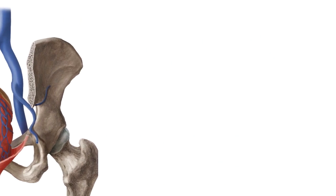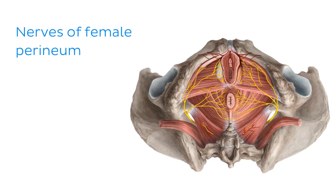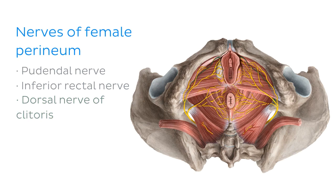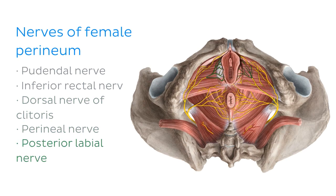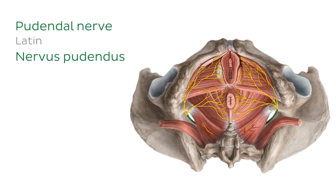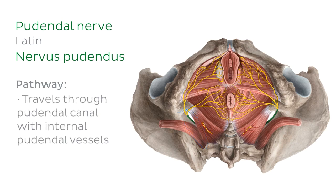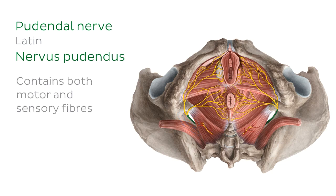Let's move on to talk about the nerves of the female perineum. There are six groups: the pudendal nerve, the inferior rectal nerve, the dorsal nerve of the clitoris, the perineal nerve, the posterior labial nerves, and the anococcygeal nerves. These nerves are responsible for the sensory and motor innervation to structures in the female perineum. The pudendal nerve is derived from the pudendal plexus, consisting of sacral nerves S2 to S4. It enters the perineal region via the lesser sciatic foramen, travels within the pudendal canal with the internal pudendal artery and vein, and contains both motor and sensory fibers.